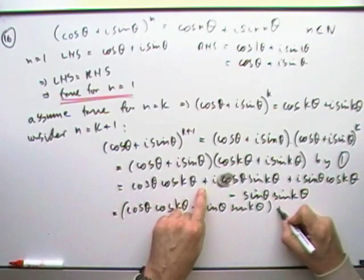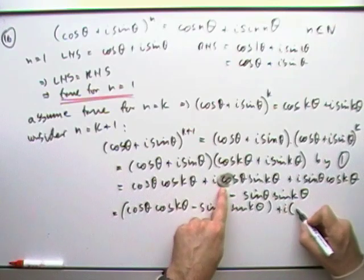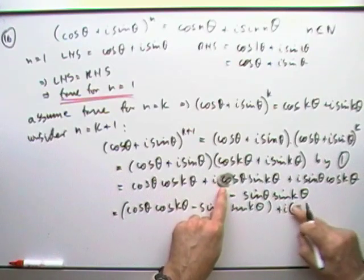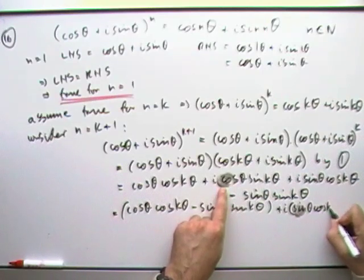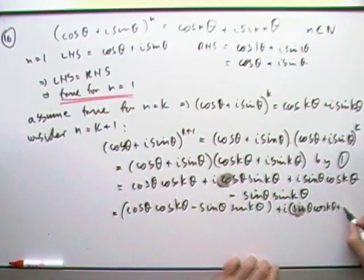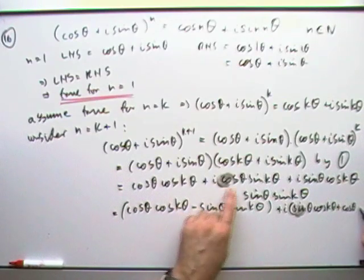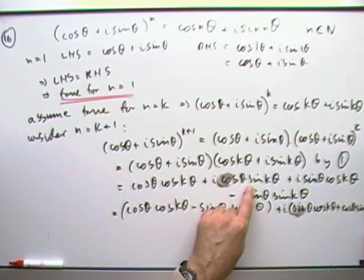And the other part plus i times, and here I've just got, I'll put that one first, that's something more obvious, sine θ cos kθ, run out of space, plus cos θ sine kθ, I don't know if that's going to show.